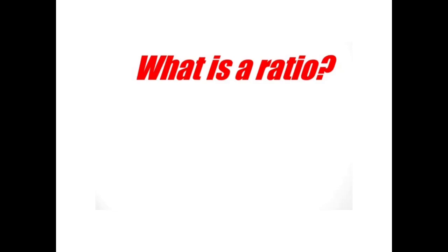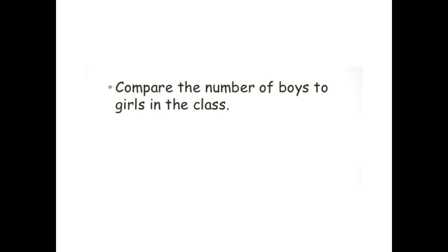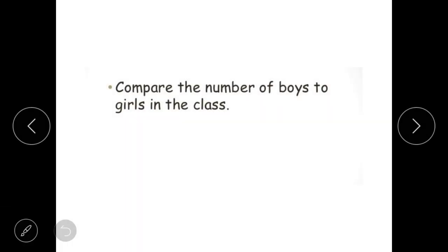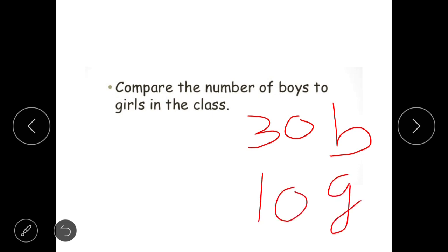Welcome dear students. Today we are going to discuss the topic ratio. Before going to the definition of ratio, we will go through examples to understand this concept. First of all, let's compare the number of boys to girls in the class. Let us suppose there are 30 boys in your class and there are 10 girls. B represents boys and G represents girls.